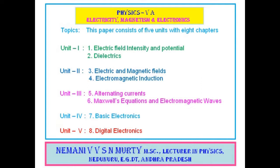Unit 1 has 2 chapters: the 1st is Electric Field Intensity and Potential, and the 2nd is Dielectrics. Unit 2 has 2 chapters: the 3rd is Electric and Magnetic Fields, and the 4th is Electromagnetic Induction. Unit 3 has 2 chapters: the 5th is Alternating Currents, and the 6th is Maxwell's Equations and Electromagnetic Waves.